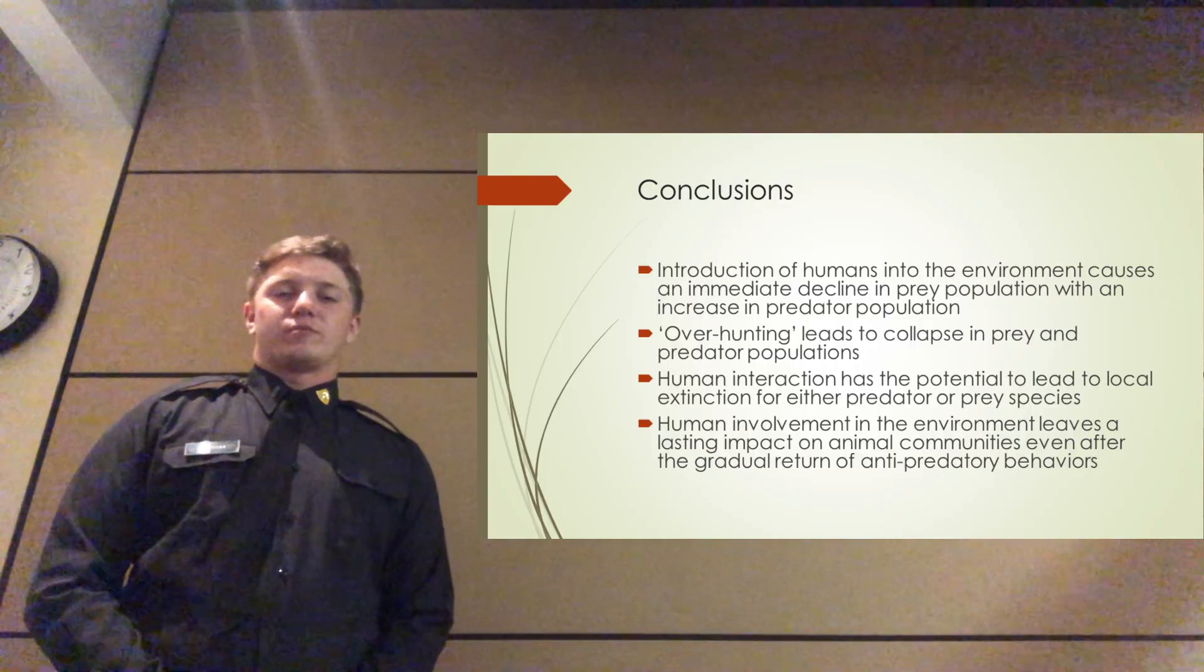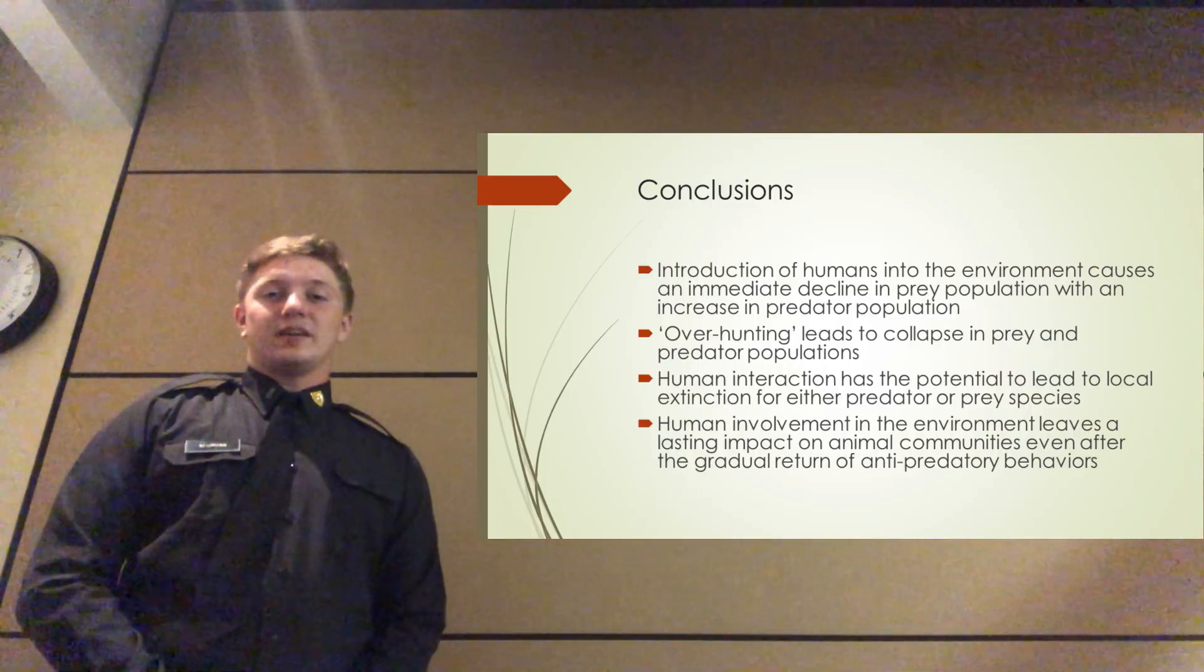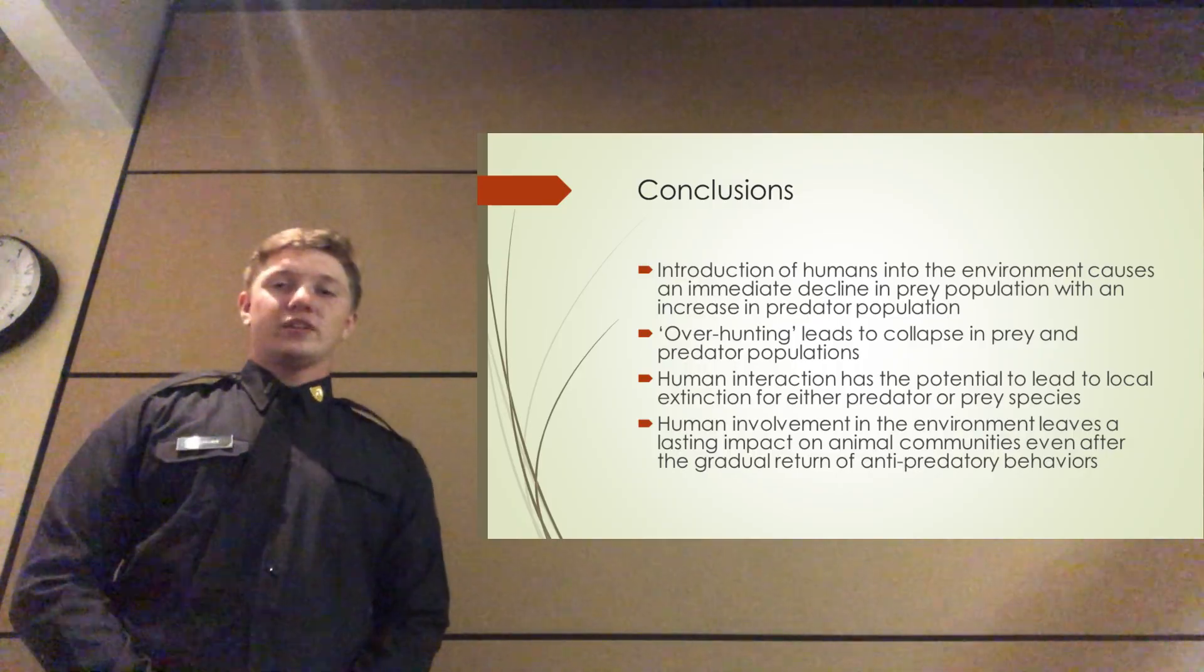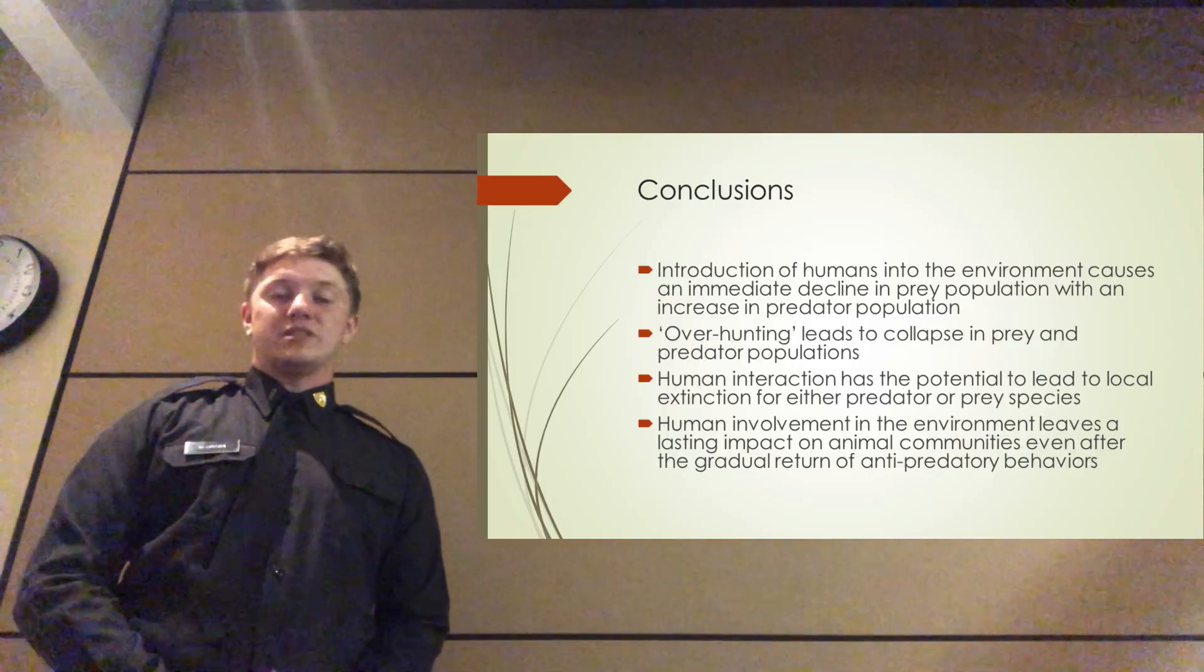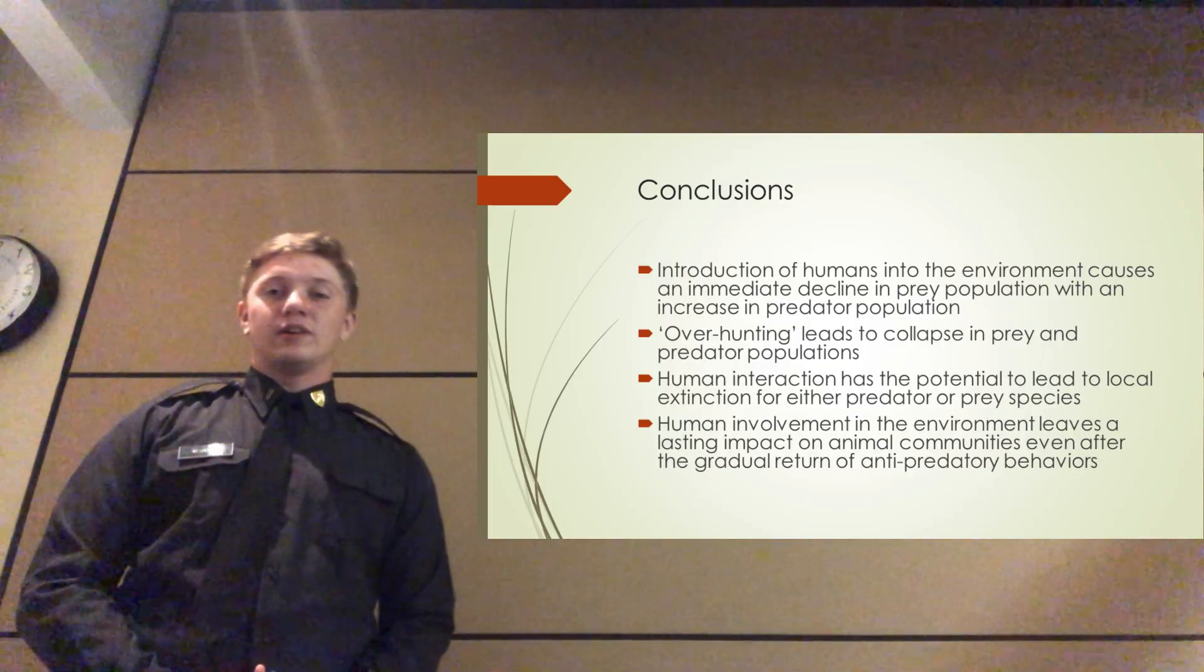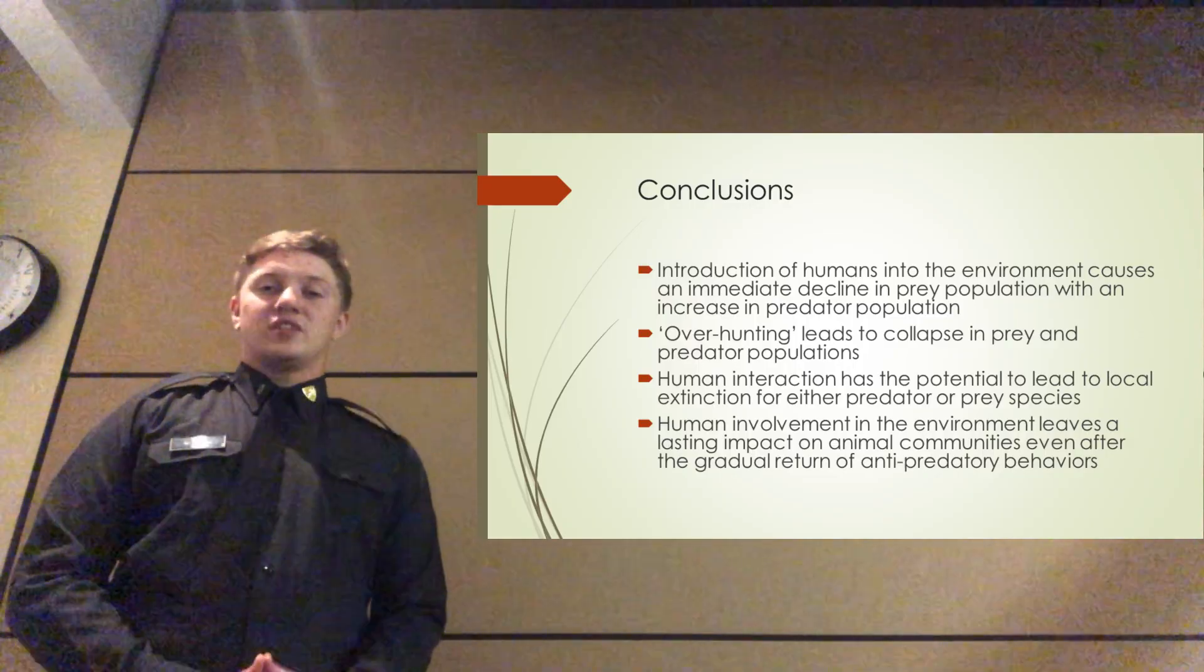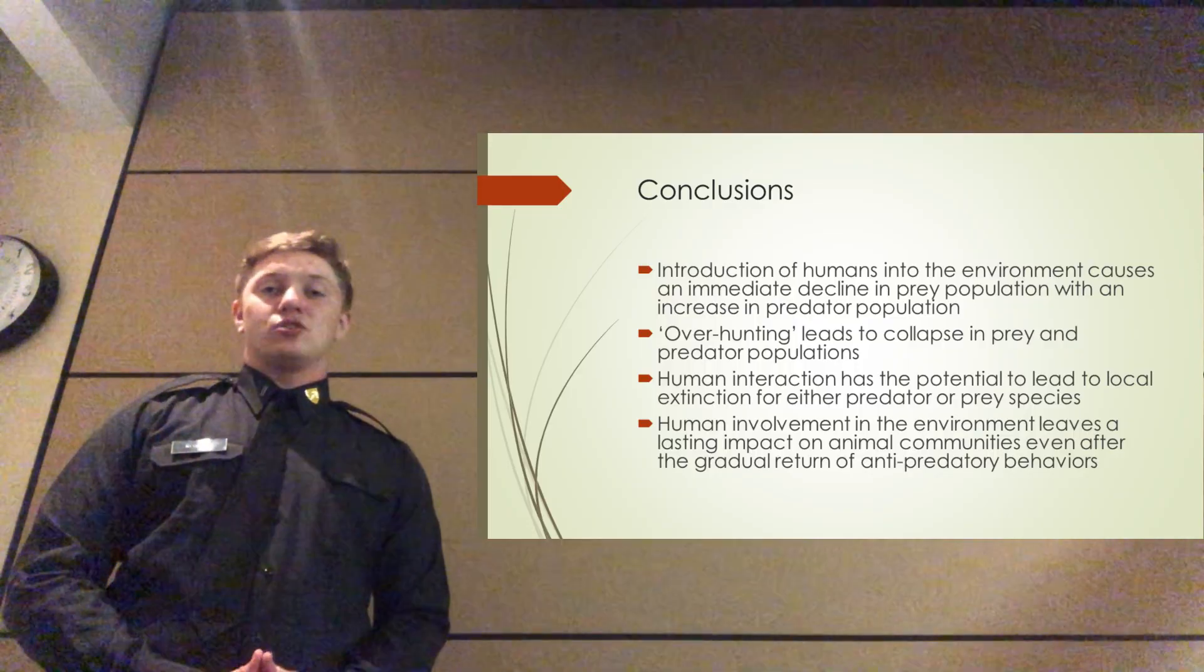So what conclusions can we draw from all these different situations that we've modeled? Firstly, we know that the introduction of humans into our environment has an immediate impact on both the predator and the prey populations. Initially, the anti-predatory responses of the prey are dampened, so the predators have free rein for a time. Eventually, the prey population is overhunted and gets so low that the predators can't sustain themselves at their new population. And so both species spiral down and establish a new equilibrium. If the humans don't leave in time or if the effect was too stark, then it can lead to an extinction event. That's a very real possibility in a lot of these models. However, if the humans do leave in time, then the species can gradually recover. And we've seen that it takes longer for a species to recover the anti-predatory behaviors that it once had than it took for it to lose them.